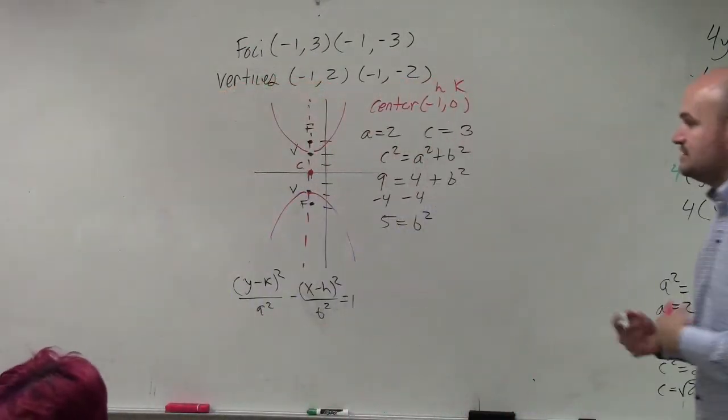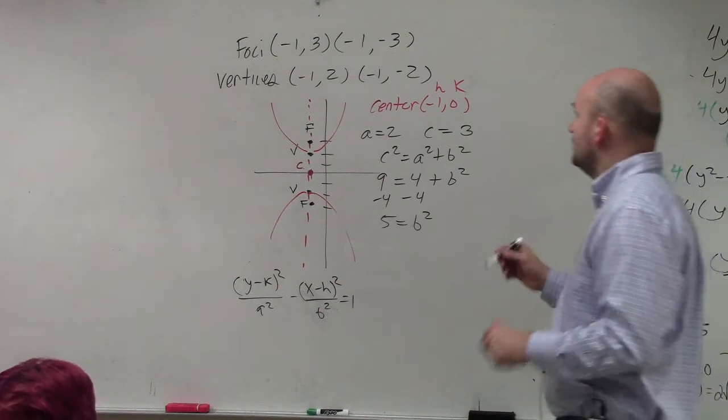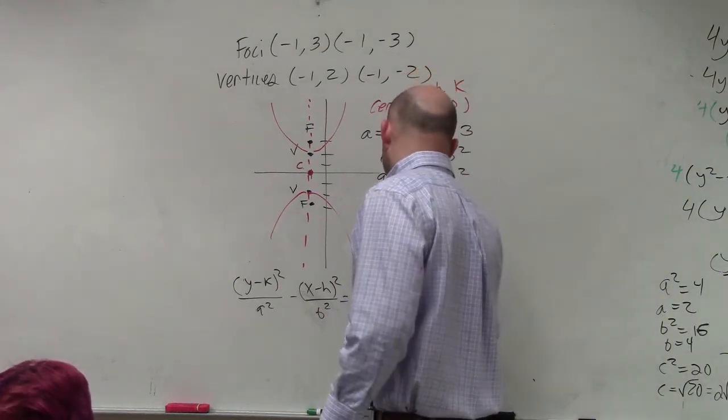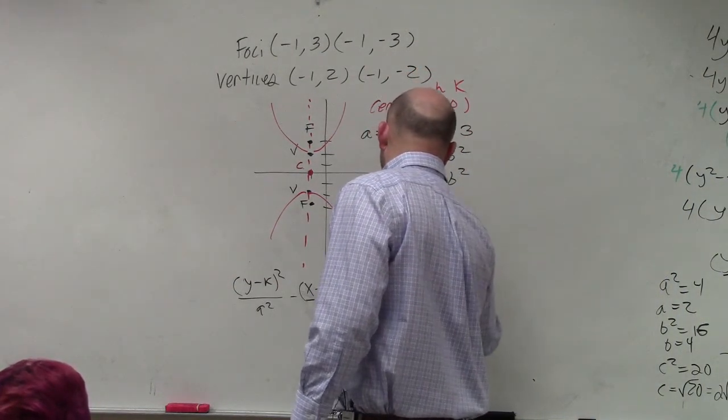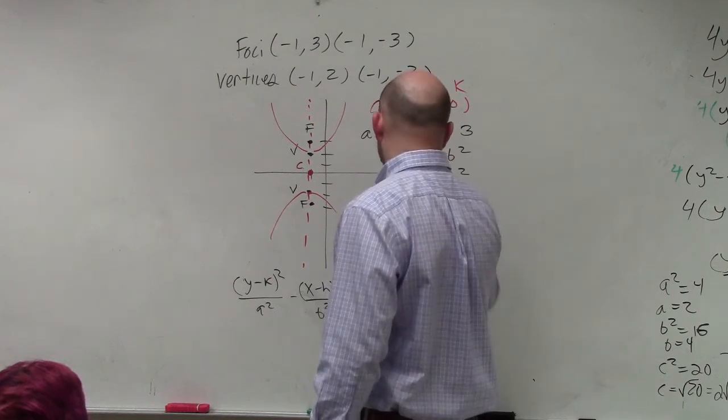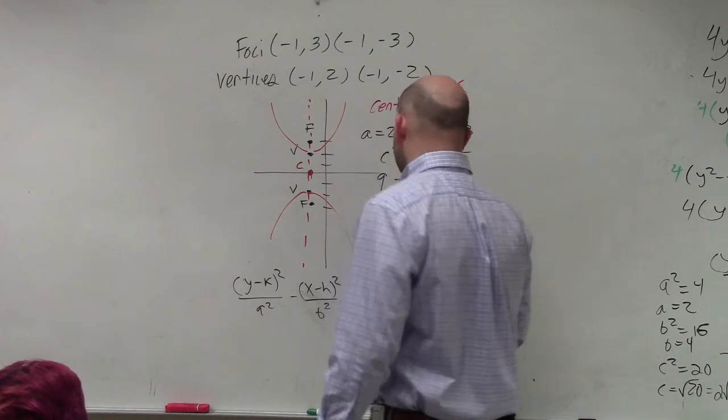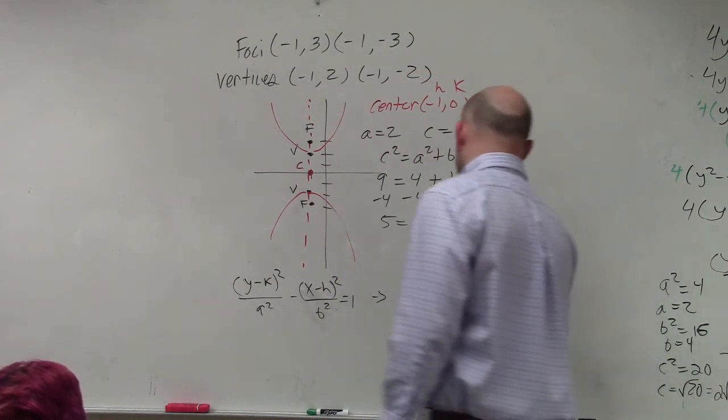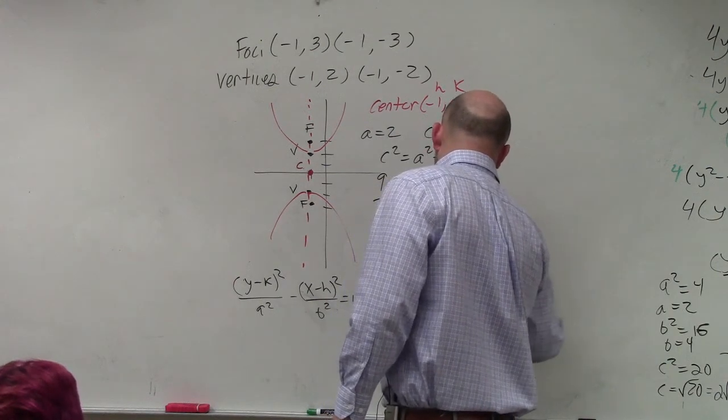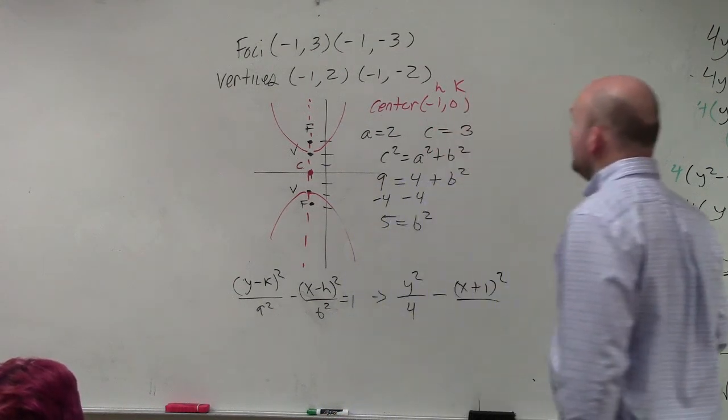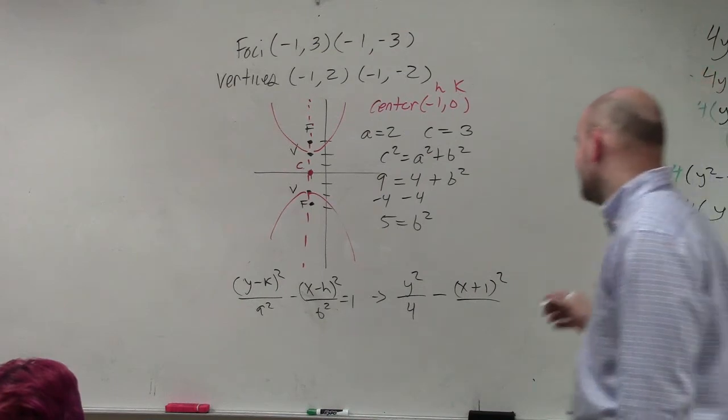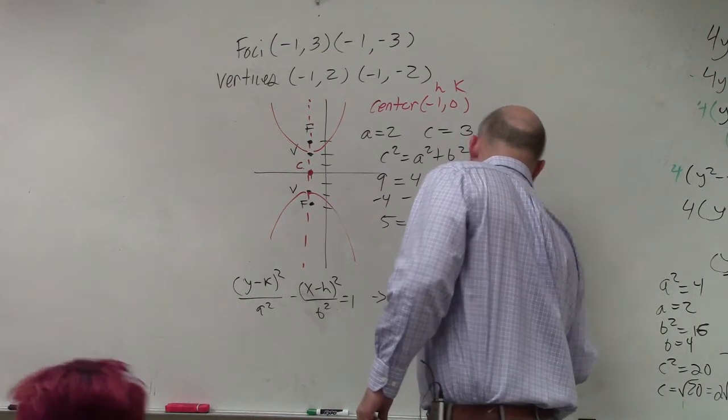And then basically, what I'm now doing is plugging in my h and my k. So k is 0. So it's going to be y squared over a squared, which is 4, minus x minus h. So that's going to be x plus 1 squared over b squared, which is 5 equals 1.